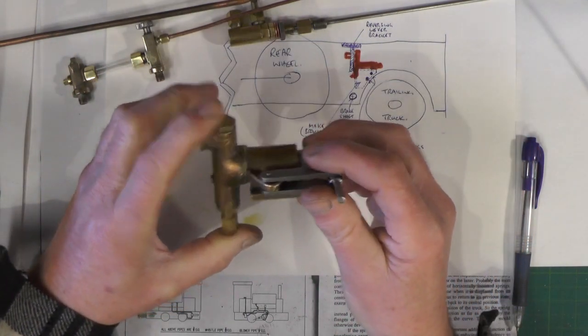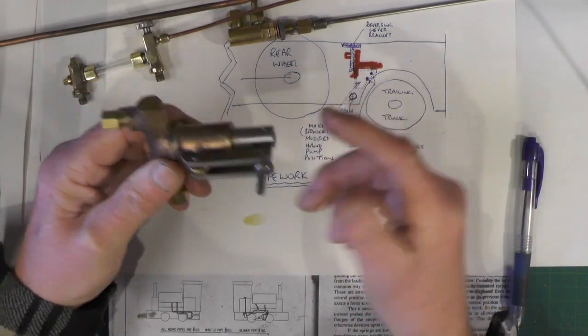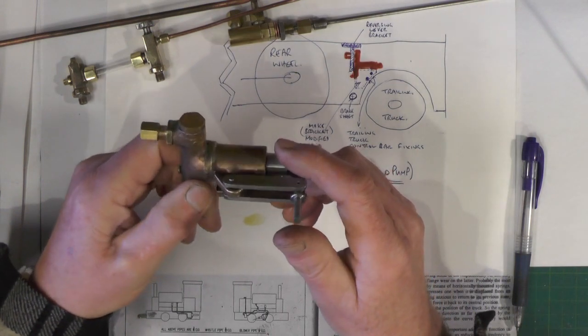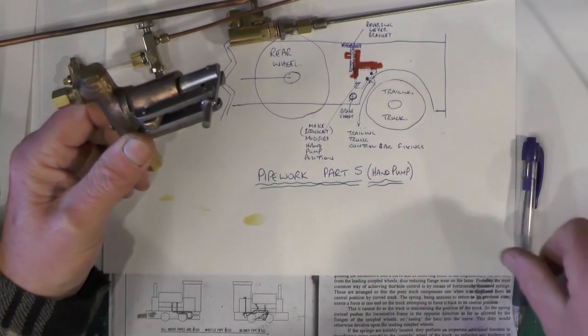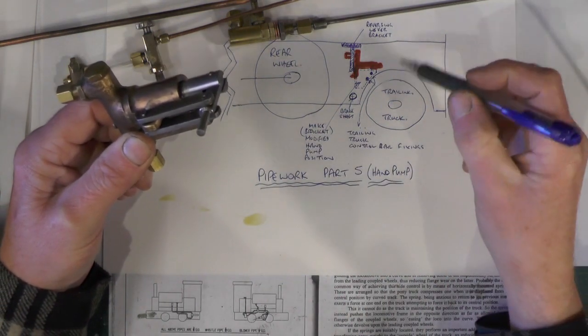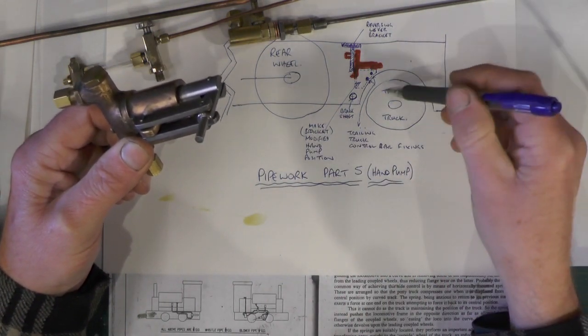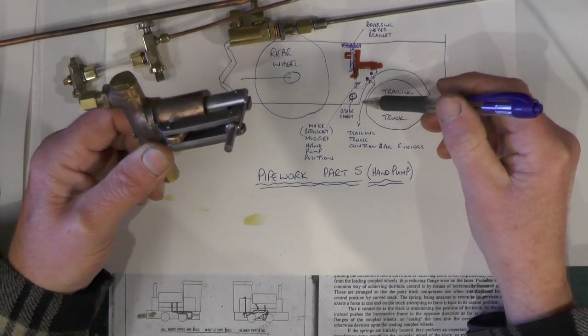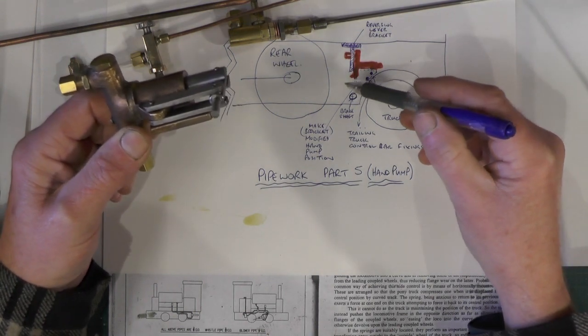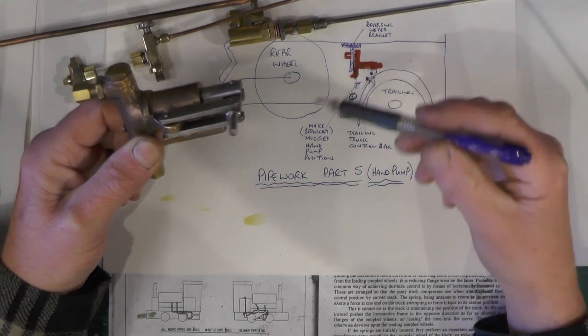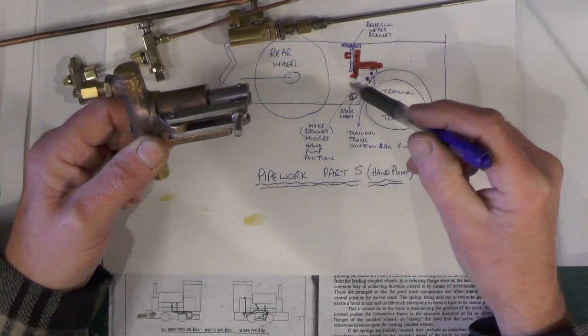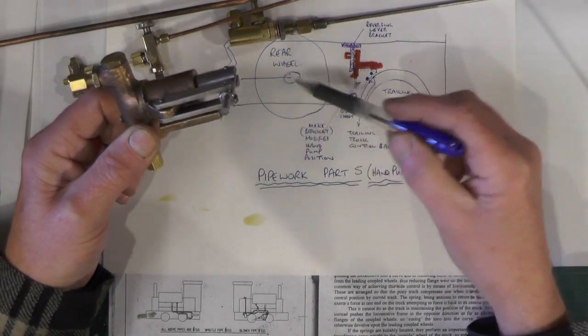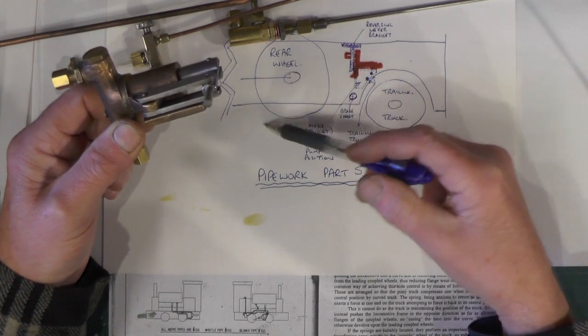Anyway, if you are putting a trailing truck on, it does tell you the positions in the handbook at the back of the book where to locate the new holes for the pump bracket to fix. Well that's okay in a four-wheel Sweet Pea, but I've done a meter made which has got six wheels.